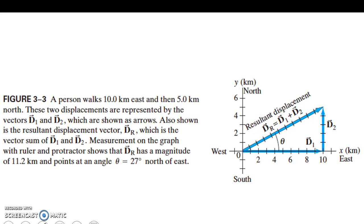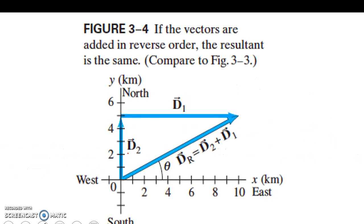Now if we're not walking in a straight line — say we travel 10 kilometers east and then 5 kilometers north — to find our displacement, we add the vectors. We can use the Pythagorean theorem to get 11.2 kilometers, and the angle we can solve for using trig to get 27 degrees. If we do it in reverse order — north first, then east — our resultant is still going to be the same. So the order of adding vectors doesn't matter.